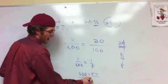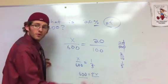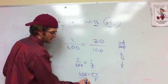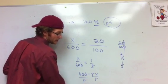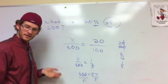We have to divide by this coefficient or multiply by the reciprocal. We divide each side by 5. x equals what, everybody? 120! 120.